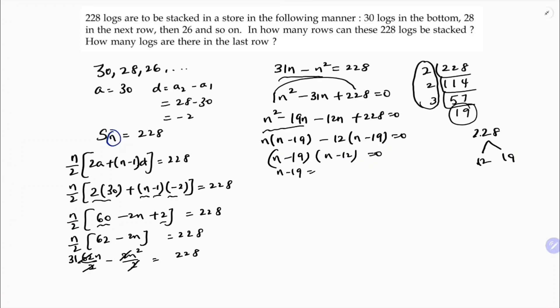n minus 19 equals 0, n minus 12 equals 0. So n equals 19, n equals 12. Now here the values of n are both positive, so which one to take? How to decide? Now you find a₁₉.